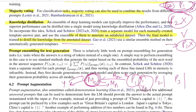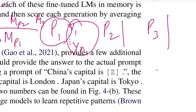Prompt ensembling for text generation differs from classification because you must generate a sequence rather than a single token. At each timestep t, the word generated depends on previously generated words. The ensemble approach generates output based on the ensemble probability for the next word: x is the input, z-less-than-t is the tokens generated so far, and the t-th output is averaged across all k prompt functions.